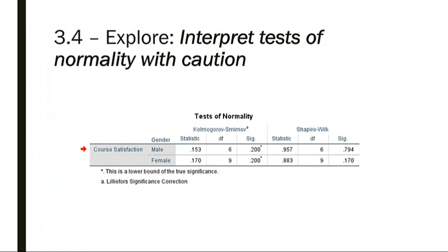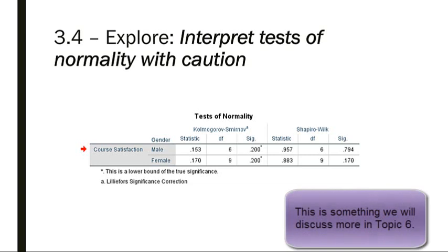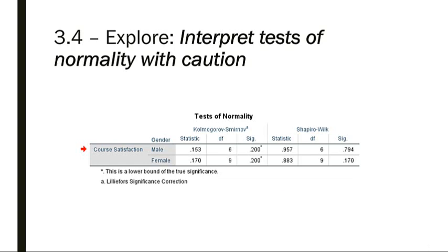I want to warn you to interpret statistical tests of normality with caution - use your common sense first. The problem with both the Kolmogorov-Smirnov and the Shapiro-Wilks tests is that with large samples, they can be hypersensitive to small deviations from normality - you get a statistically significant result for a deviation you might not care about. With small samples, a normal distribution might not produce a normally distributed sample. So what I recommend is that you look at the QQ plots.